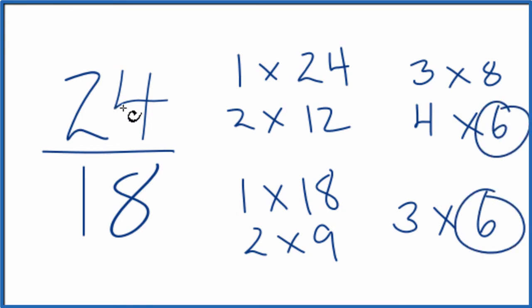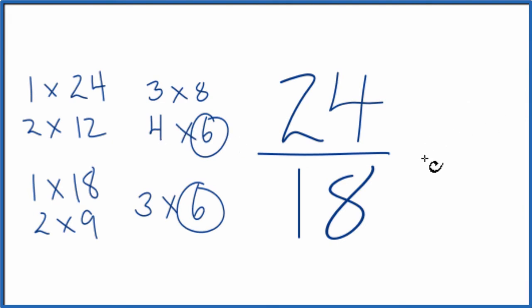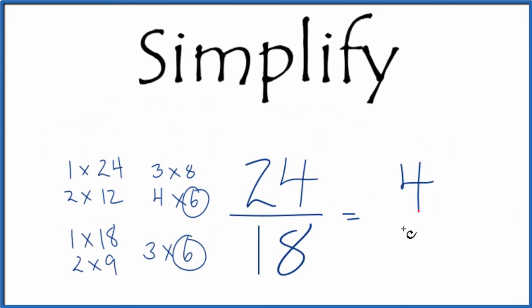So we'll divide 24 by 6 and then 18 by 6, and we'll have simplified 24 18ths. Let's move this over here. So 24 divided by 6, that equals 4, and then 18 divided by 6 equals 3, and we've simplified 24 over 18 down to 4 thirds.